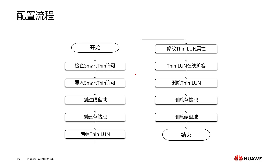Finally, let's take a look at the configuration process of SmartThin. First, we need to confirm whether we have the license permission; if not, we need to obtain and import a license. Next, we create storage space — that is, create a hard disk domain and a storage pool. Then create ThinLun. Operations on ThinLun include modifying its attributes and performing online expansion. If storage space is no longer needed, the ThinLun can be deleted. The delete operation is a reverse of creation: delete ThinLun, delete storage pool, delete hard disk domain, then release the storage space.